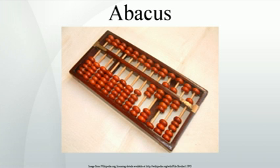The earliest known written documentation of the Chinese abacus dates to the 2nd century BC. The Chinese abacus, known as the suanpan (lit. counting tray), is typically 20 cm tall and comes in various widths depending on the operator. It usually has more than seven rods. There are two beads on each rod in the upper deck and five beads each in the bottom for both decimal and hexadecimal computation. The beads are usually rounded and made of a hard wood. The beads are counted by moving them up or down towards the beam — move toward the beam to count their value, move away to not count their value. The suanpan can be reset to the starting position instantly by a quick jerk along the horizontal axis to spin all the beads away from the horizontal beam at the center.